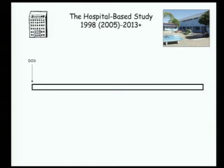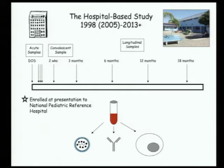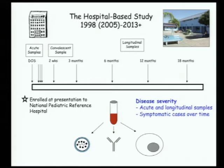I'm going to tell you about two studies in Nicaragua. In the hospital study, children come to the National Reference Pediatric Hospital, are sampled three days during illness plus a convalescent sample, and are followed over 18 months. This allows us to look at disease severity because large percentages of children coming to the hospital are dengue-positive and severe — maybe 25 to 40 percent will have severe disease. We look at the virus, antibody, and immune cells from blood samples.